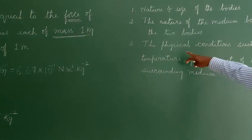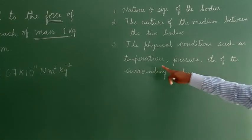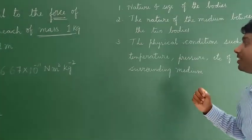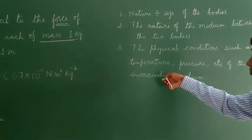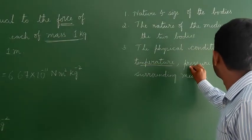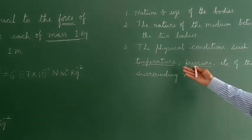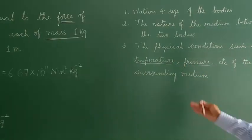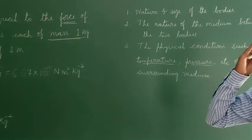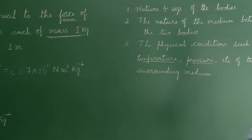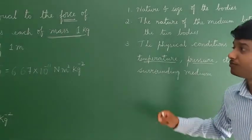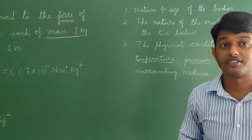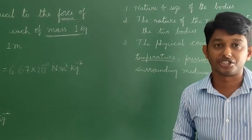The third factor is the physical conditions such as temperature, pressure, etc. of the surrounding medium. Even these physical conditions cannot affect the value of G. So this is what you need to know about gravitational constant, represented by capital G.